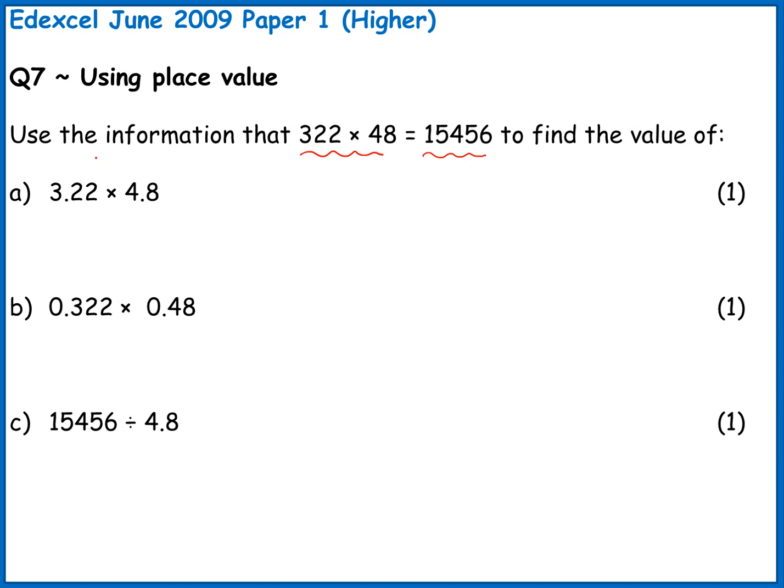If I compare 322 times 48 to 3.22 times 4.8, well to get from 322 to 3.22 I've had to divide by 100. So this answer is a hundred times smaller and you can check just by counting the decimal places. So it would have been 3.22, 2 places. This one here, from 48 to 4.8 that's ten times smaller, and again that means it's one decimal place smaller.